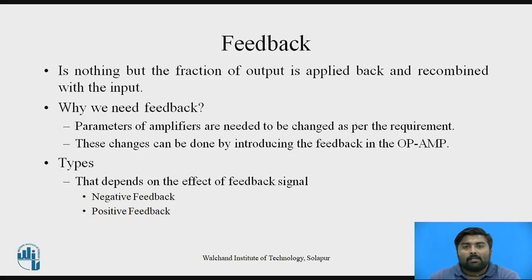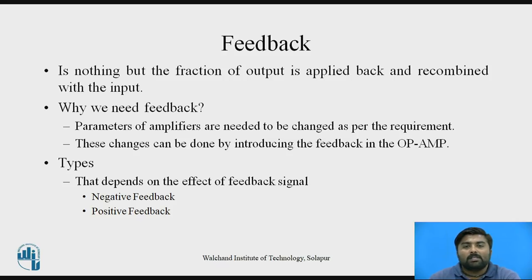Now, to overcome the disadvantages seen in the open-loop op-amp, we use feedback, and that is called a closed-loop op-amp. Feedback is nothing but the fraction of the output that is applied back and recombined with the input. Why do we need feedback? Some parameters of amplifiers need to be changed as per the requirement in applications, and these changes can be done by using feedback in the op-amp circuit. Using feedback, there are two types: one is negative feedback and the second one is positive feedback.